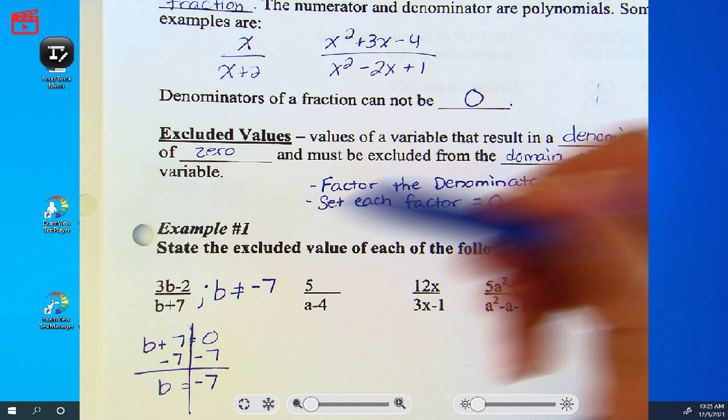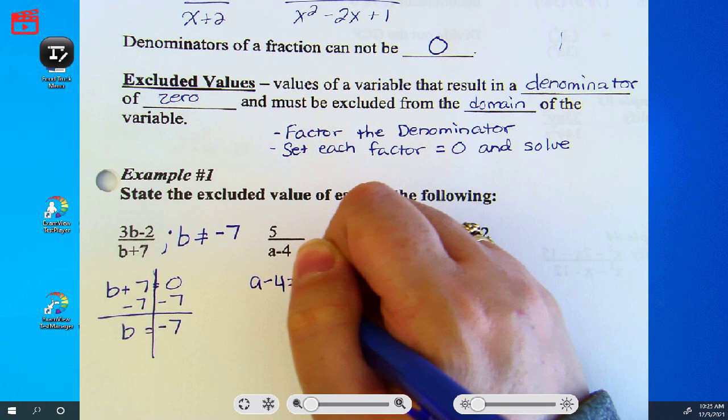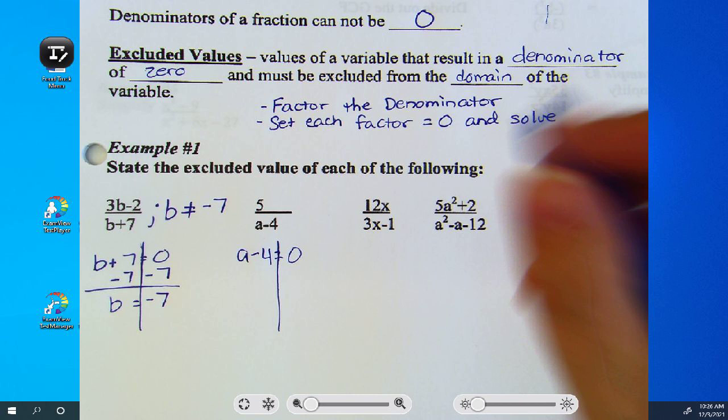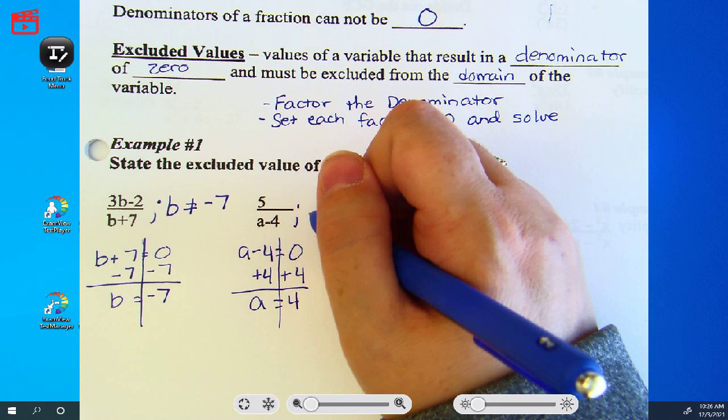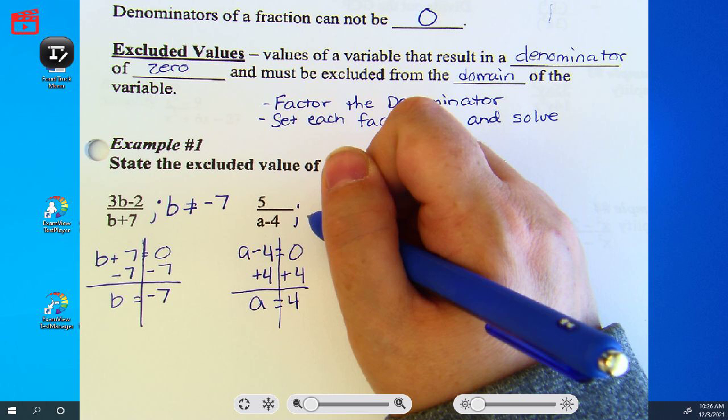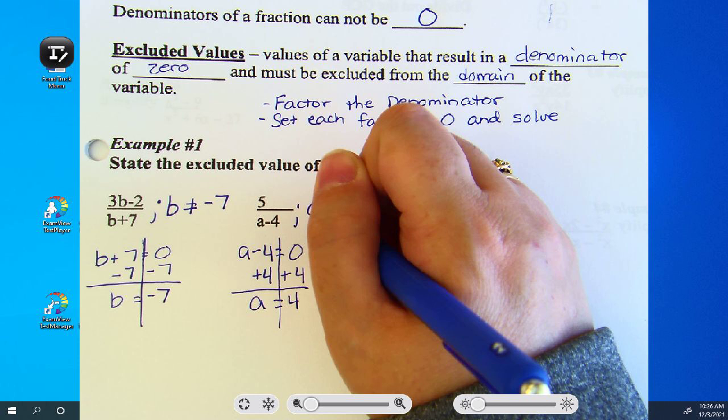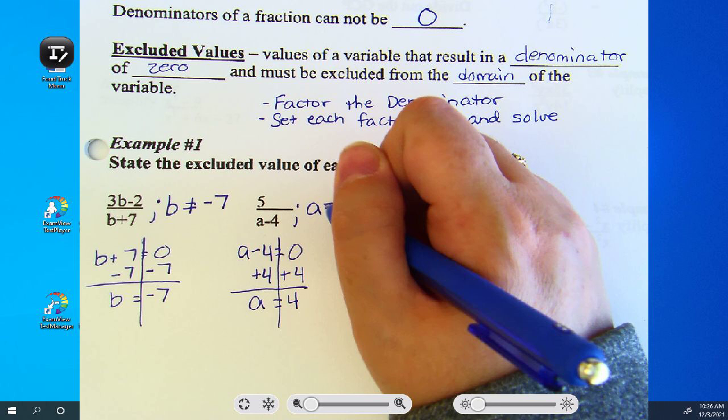So, the second one, a minus 4, is already factored. What are we going to do to solve this? Yes, the opposite subtracting 4 is adding 4. So, a cannot equal 4.